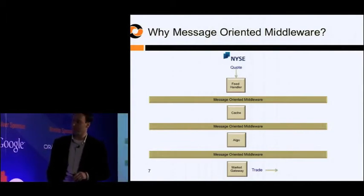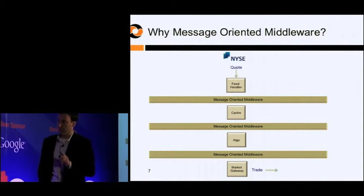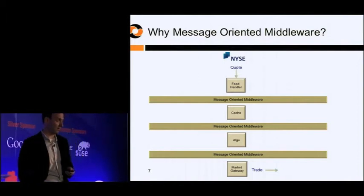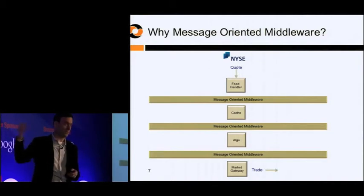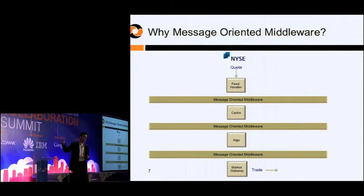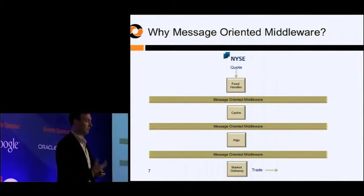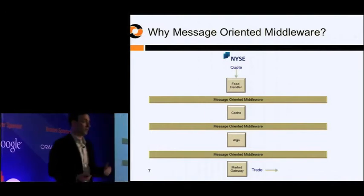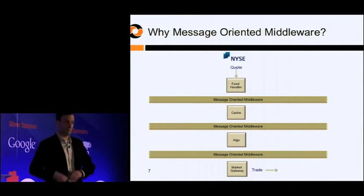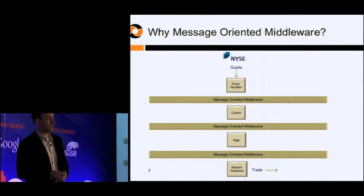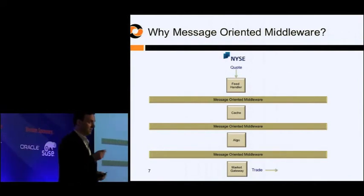Let's look at what a typical architecture might look like. The New York Stock Exchange sends a quote out, and a firm would have a process called a feed handler that listens to that packet. Quotes come down on a UDP multicast basis and every exchange has a proprietary format, so the feed handler takes that information and normalizes it — turning it into something your downstream application can understand — so you don't have to write your application to understand the differences between NYSE, Nasdaq, ARCA, CME, and the London Stock Exchange.